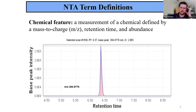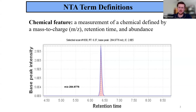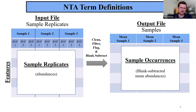Before I go into the meat of the presentation, I want to make sure everybody's on the same page in terms of definitions. A chemical feature is what we're going to define as the measurement of a chemical at a given mass-to-charge value and retention time. This feature is observed as a peak, and that can be integrated into an abundance, which gives us an idea of the relative concentration of the chemical. Our web application takes input files of the samples, replicates, and features measured in your study, then does statistics and QA/QC filtering on them.